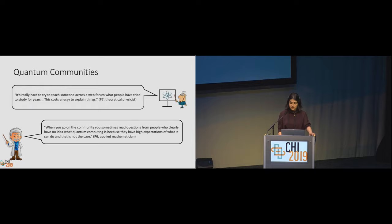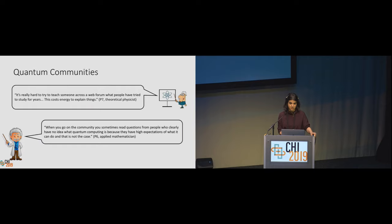From our interviews, we found that many issues with online communities stem from the fact that platforms did not distinguish between novices and experts. Our participants, experts in their field, expressed preferences for specialized communities that encourage deep discussions and information exchange. We're not advocating for creating a separation or information gate between novices and experts, but a lot of these online communities can be vastly improved by applying the lessons learned by HCI and CSCW researchers in building successful online communities.